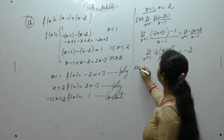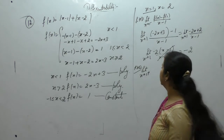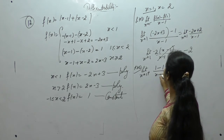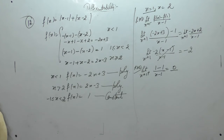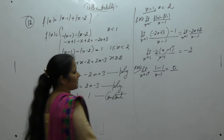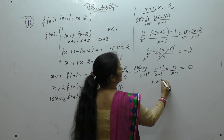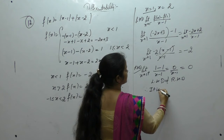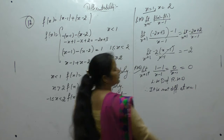Now the right hand derivative: limit x tends to 1 positive. When x is greater than 1, the function has value 1 and f(1) is also 1. So (1 − 1) / (x − 1) = 0 / (x − 1) = 0. Since left hand derivative (−2) is not equal to right hand derivative (0), the function is not differentiable at x = 1.